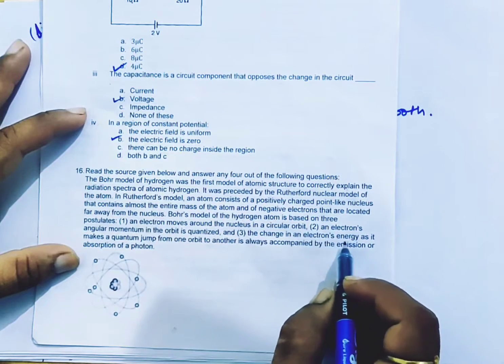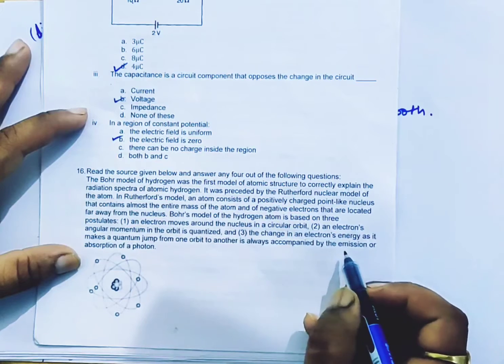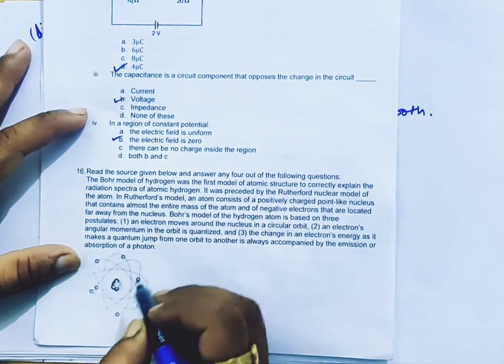The change in electron's energy as it makes a quantum jump from one orbit to another is always accompanied by the emission or absorption of a photon.